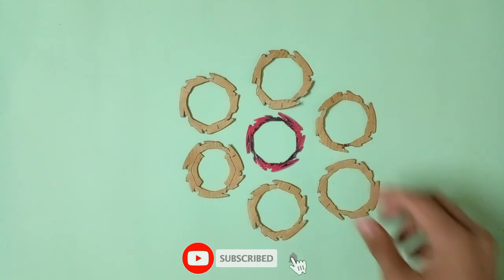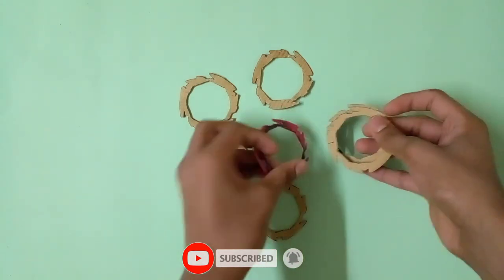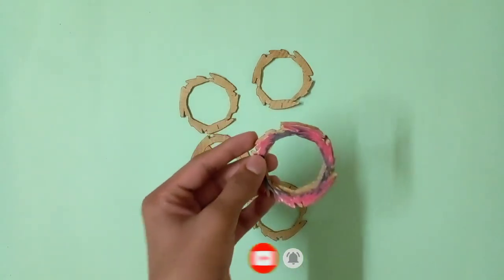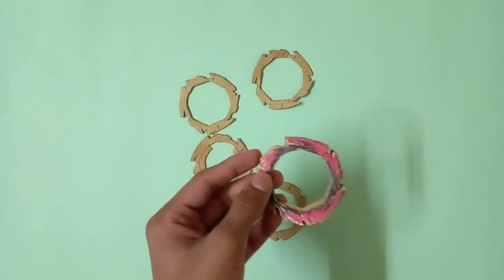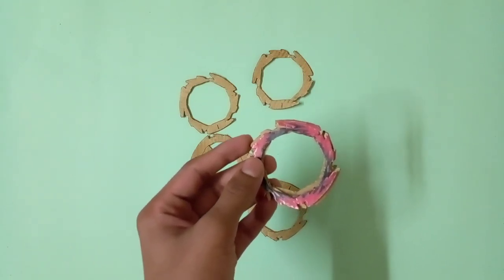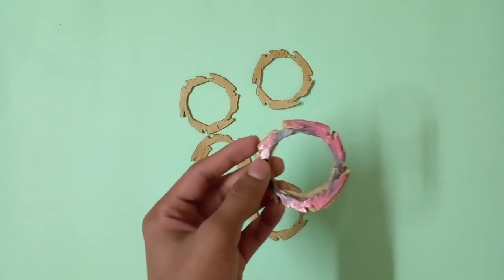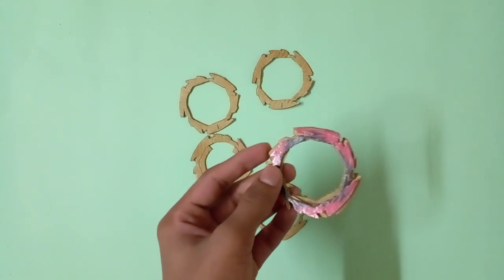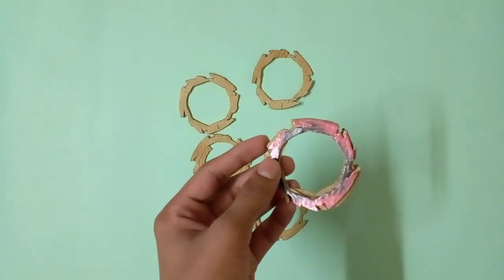So guys, to make the devil ring first, stick two cardboard pieces on the devil ring with glue. And I'm going to use hot glue gun, which I always use to make my cardboard Beyblades. But guys, if you do not have hot glue gun, in that case, you can use Fevicol glue instead of hot glue.